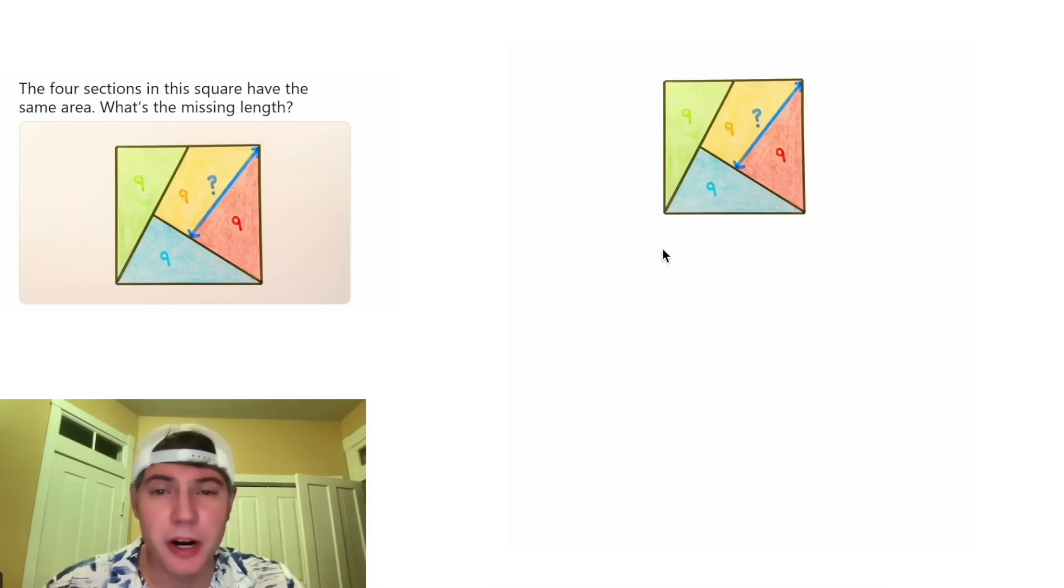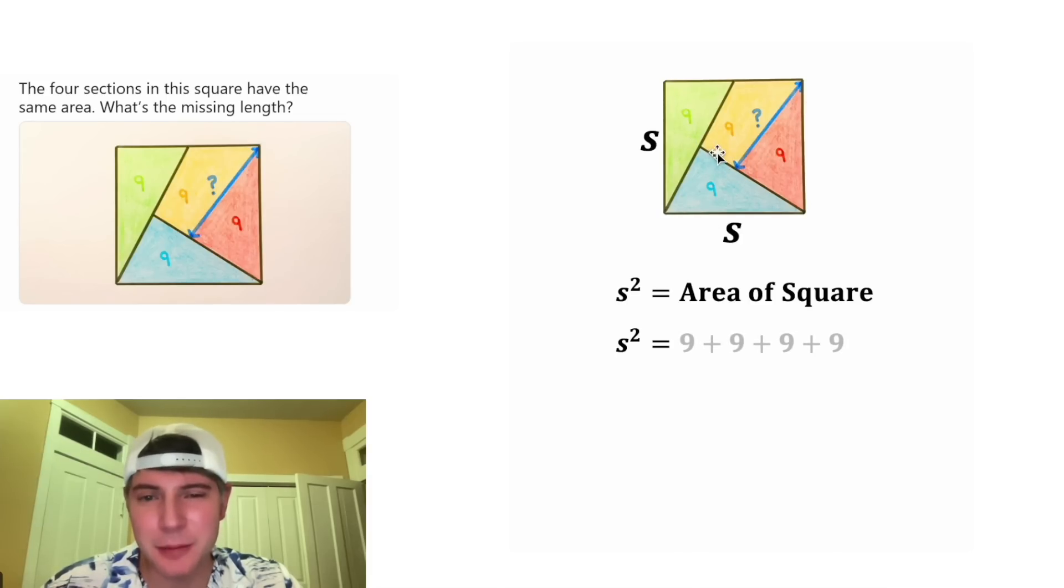Since this is a square, we know the sides are equal length and s squared is going to be the area of this square. To get the area of the square, we can add 9 + 9 + 9 + 9. Nine plus nine plus nine plus nine equals 36. Then we can square root both sides and we get s equals 6. So let's change these s's into sixes.